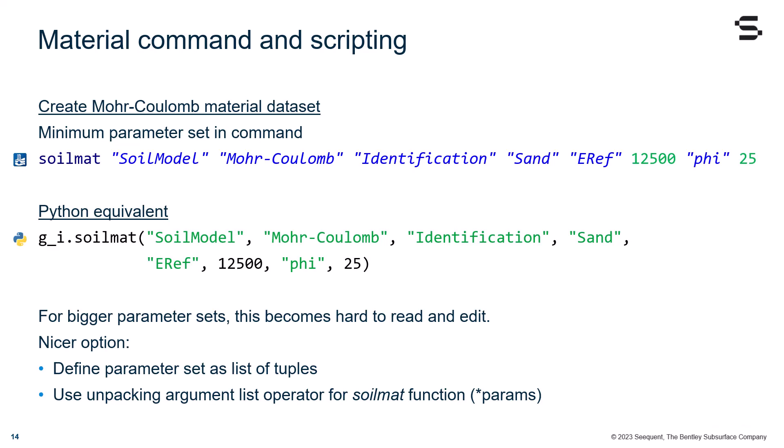For bigger parameter sets, this can become hard to read and edit. There is a nicer option that defines the parameter set as list of tuples. And then, we use the unpacking argument list operator for soilmat function, asterisk params.